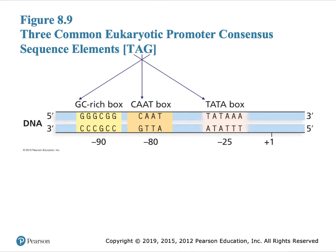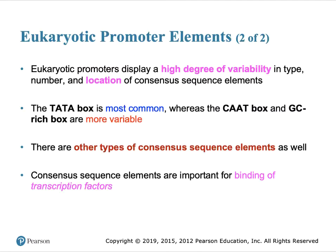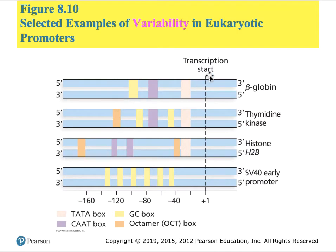A graphical representation is in figure 8.9, where the plus-one site corresponds to where RNA polymerase would start encoding an RNA molecule. The presence of these eukaryotic promoter consensus elements suggests binding of proteins to orient the RNA polymerase and get it on its way, forming part of the initiation complex. Because of the number of eukaryotic genes studied, there is a high degree of variability in the number and location of these consensus elements. The TATA box is the most common, whereas the other two are more variable and in some cases may be missing or replaced by alternative arrangements.